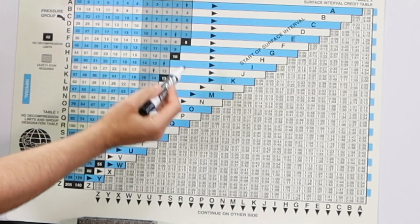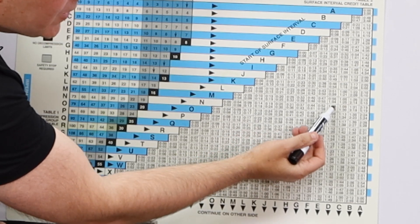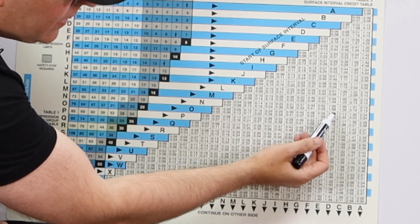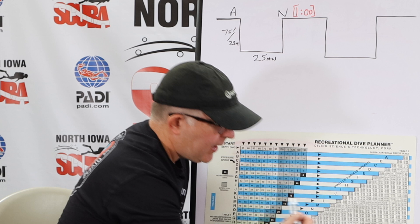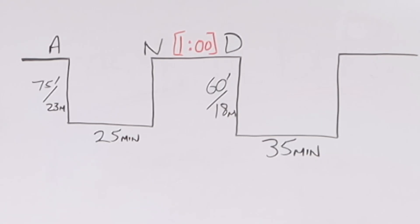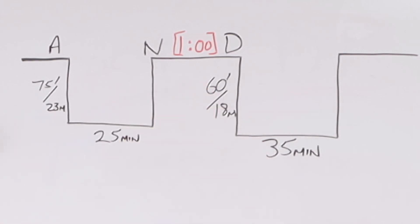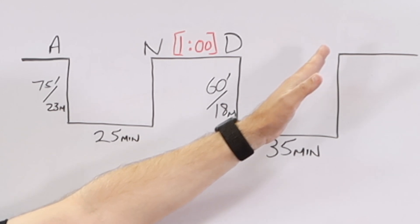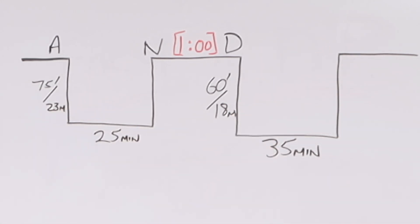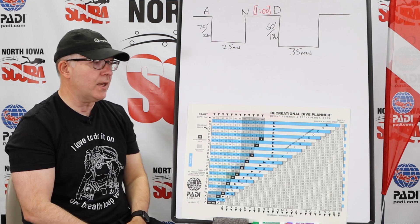Let's go back to Table 2. Pressure group N — we work all the way across until we find the box that says one hour to 108, then all the way down, and I'm now a group D diver after one hour out of the water. For my second dive, I want to dive to 60 feet or 18 meters for 35 minutes. How do I calculate what my pressure group is going to be at the end of that dive? This is where it becomes a little tricky when using the RDP — we need some additional information. I'm going to show you the hard way and the easy way to figure that out.